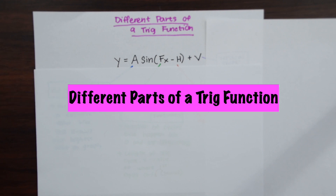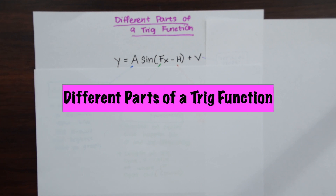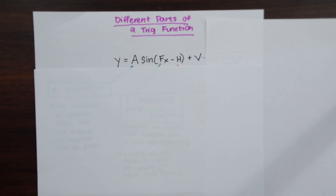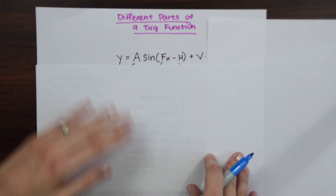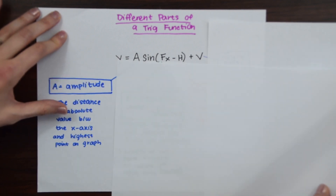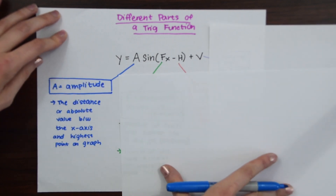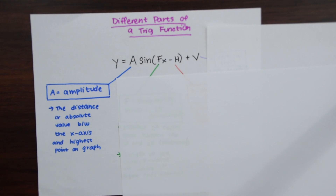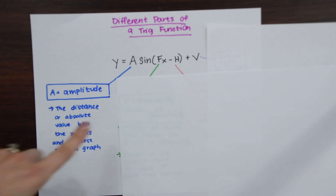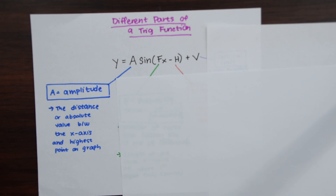Let's look at the different parts of a trig function. We have this general form: y equals a sine of fx minus h plus v. The 'a' here is our amplitude — it's the height of the trig function, or more precisely, the absolute distance between the x-axis and the highest point. So if a equals 2, the highest point would be 2 on the y-axis and the lowest point would be minus 2.